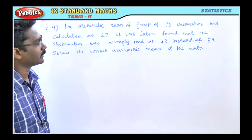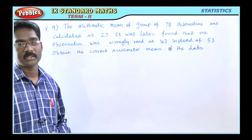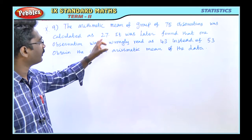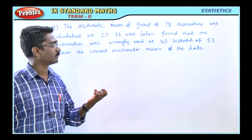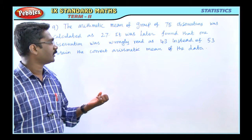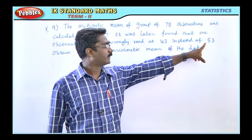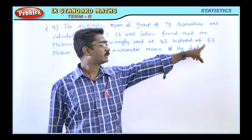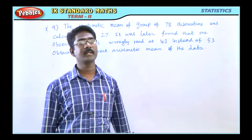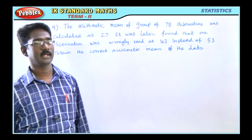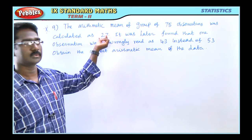In this case, the total number of observations is 75, and the mean is 27. There is a mistake: one of the 75 observations is 53, but we considered the arithmetic mean using 43 instead. So the arithmetic mean of 27 is wrong — it is based on the incorrect value.